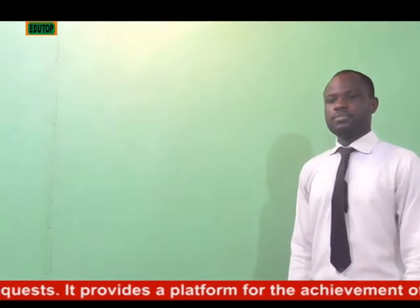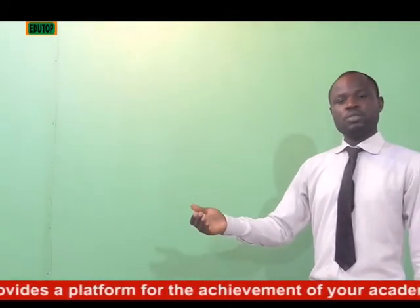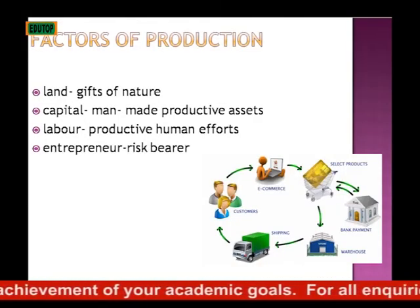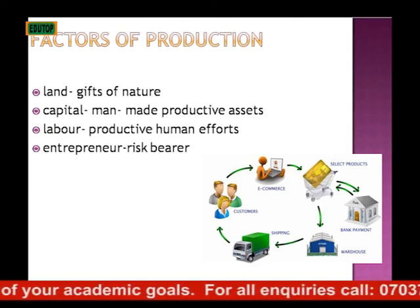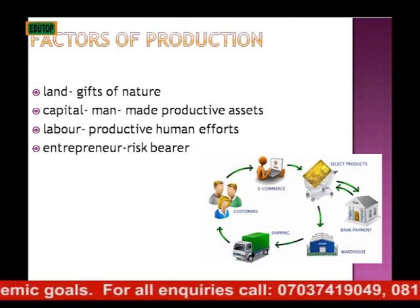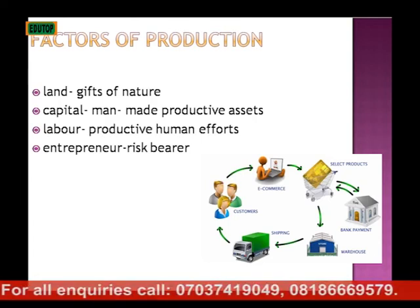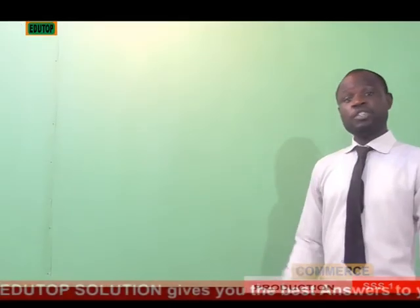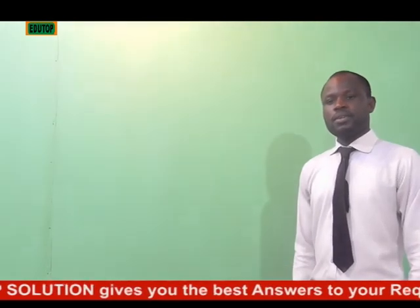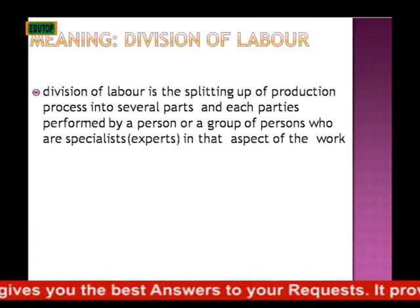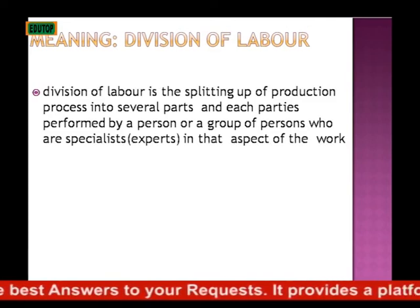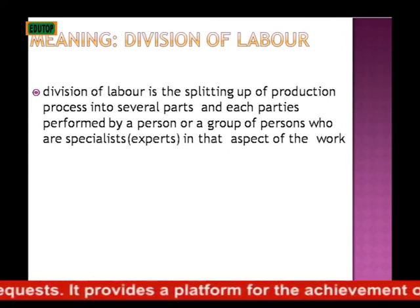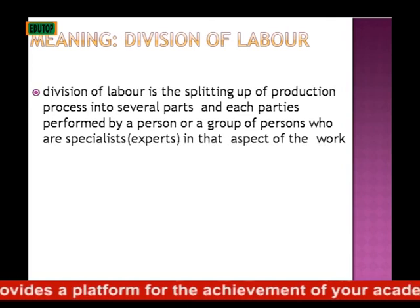Factors of production: there are four factors — land, which is gifts of nature; capital, which refers to man-made productive assets; labor, which refers to productive human efforts; and entrepreneur, which bears the risk. Division of labor is the splitting up of the production process into several parts, and each part is performed by a person or a group of persons who are specialists in their aspect of work.